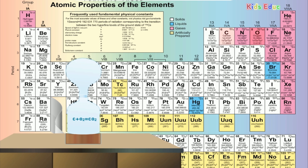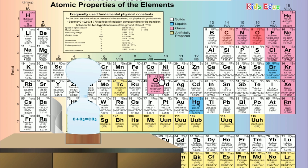Let's find carbon and oxygen on the periodic table. First, I'll click and drag the one carbon element from the periodic table and drop it in the glass container. Next, I'll get one oxygen element and drop it in the glass container, then another oxygen element.